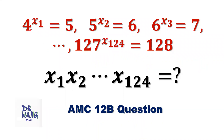If 4 to the power of x1 equals 5, 5 to the power of x2 equals 6, 6 to the power of x3 equals 7, until 127 to the power of x124 equals 128. What is the value of the product of x1, x2, until x124?